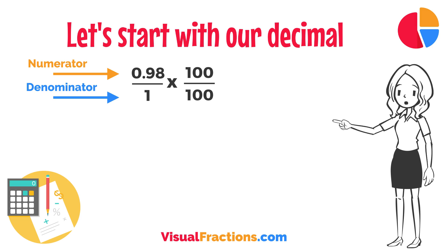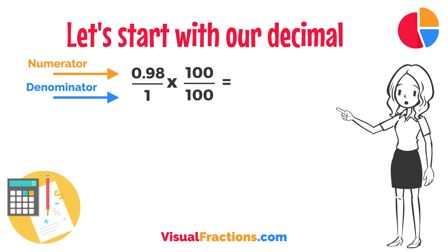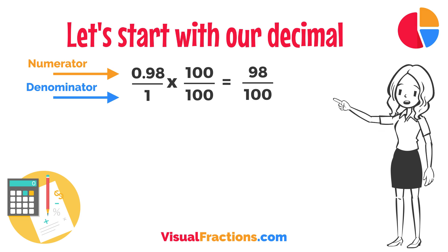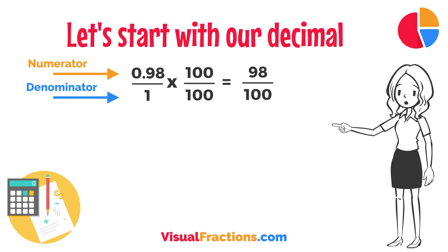So, 0.98 times 100 gives us 98, and 1 times 100 gives us 100. This translates 0.98 to the fraction 98 over 100.